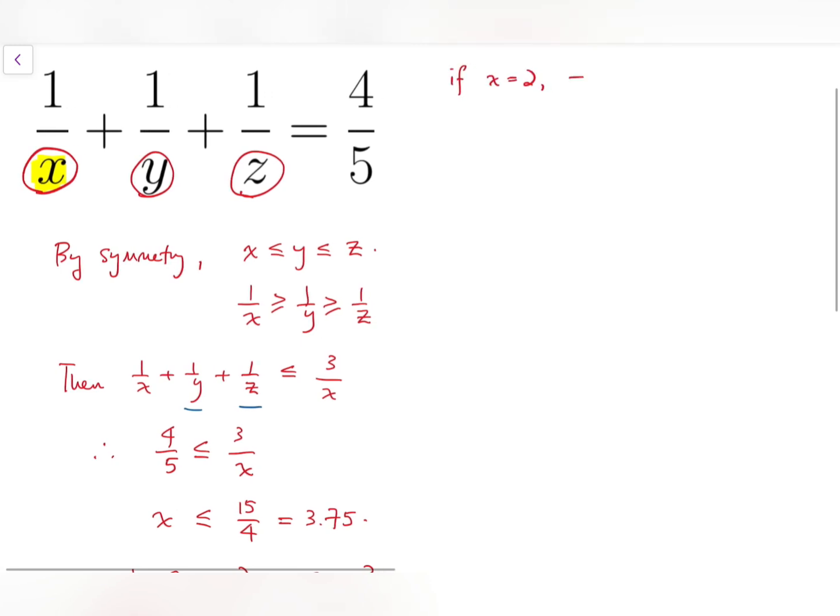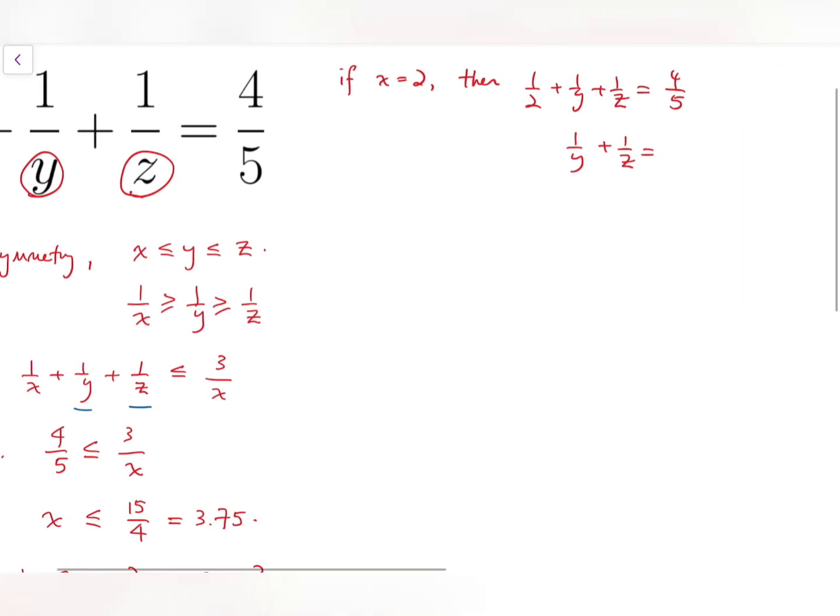For the first case, we put it into the equation. Then we'll have 1 over y plus 1 over z equals 3 over 10. We can put the fractions on left together and cross multiply.